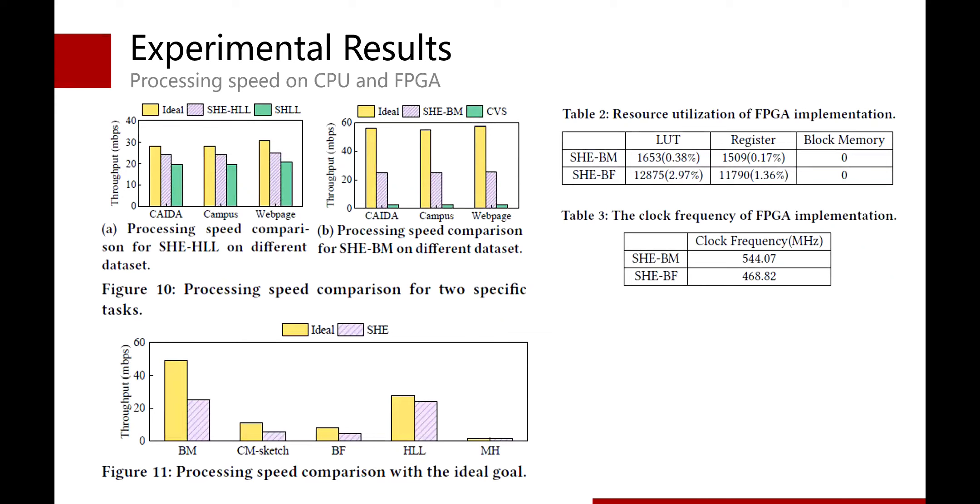We test the speed of SHE combined with five algorithms on CPU platform. The ideal is also the original algorithm in the fixed window. The results show that SHE only slows down a little speed in each algorithm. We implement SHE combined with bloom filter and bitmap in FPGA. The results show that SHE can achieve high speed in the hardware platform.